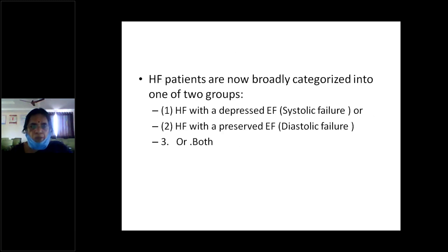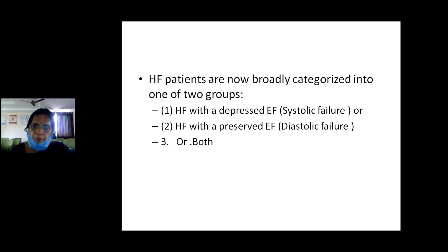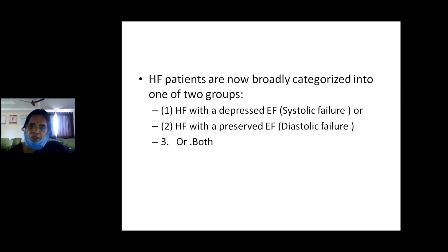Previously we used to classify heart failure into four categories: systolic, diastolic, high output, and low output failure. But nowadays the categorization has changed into two groups. One is heart failure with a depressed ejection fraction — that is systolic failure — and another is heart failure with a preserved ejection fraction — that is diastolic failure. Sometimes both can be present, which is congestive cardiac failure.